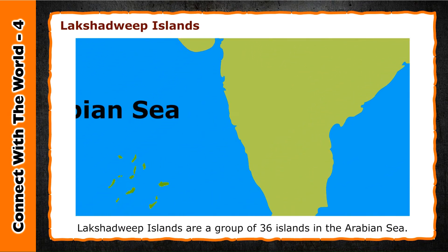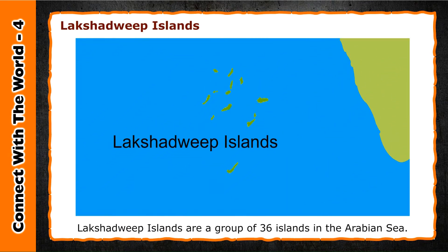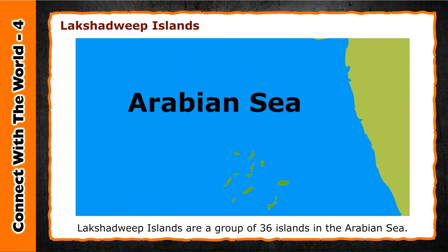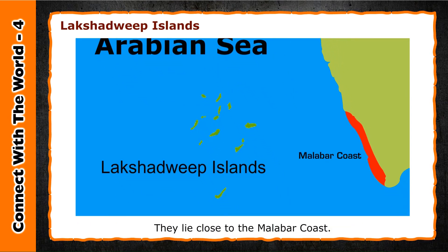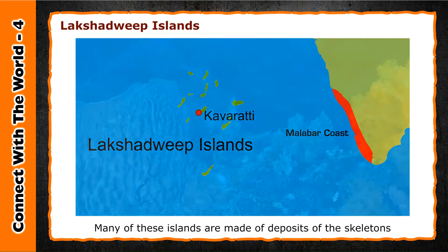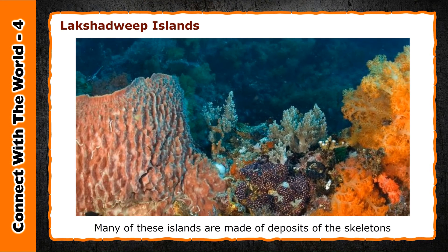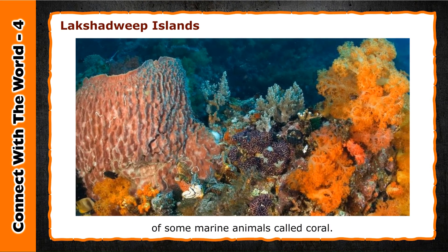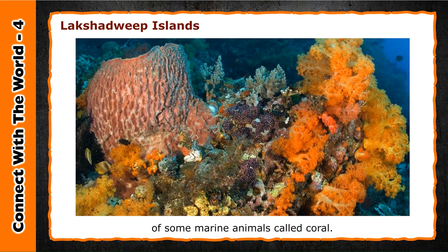The Lakshadweep Islands are a group of 36 islands in the Arabian Sea. They lie close to the Malabar coast. Lakshadweep is the smallest Union Territory of India. The capital of the Lakshadweep Islands is Kavaratti. Many of these islands are made of deposits of the skeletons of marine animals called coral.